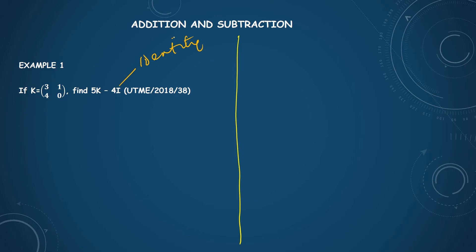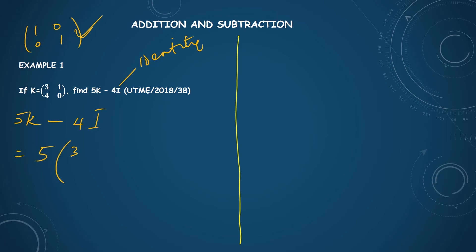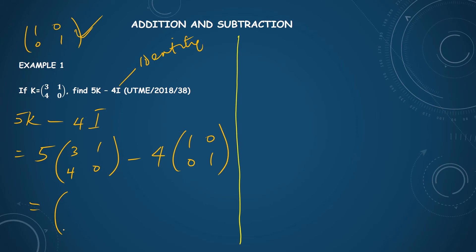So 5K minus 4I will be 5 multiplied by [3, 4; 1, 0] minus 4 multiplied by [1, 0; 0, 1], the identity matrix. This is a scalar multiplication of matrix. In scalar multiplication, a matrix is multiplied by a scalar — that is, a number. Whenever a matrix is multiplied by a number, the number multiplies through every element in the matrix. So 5 times 3 is 15, 5 times 4 is 20, 5 times 1 is 5, 5 times 0 is 0. And 4 times 1 is 4, 4 times 0 is 0, 4 times 0 is 0, 4 times 1 is 4.